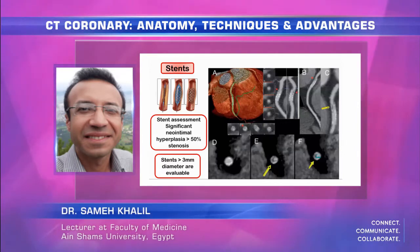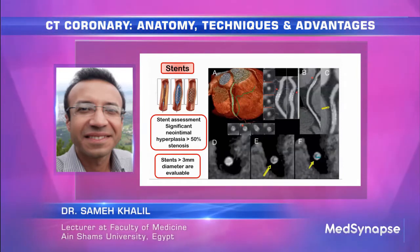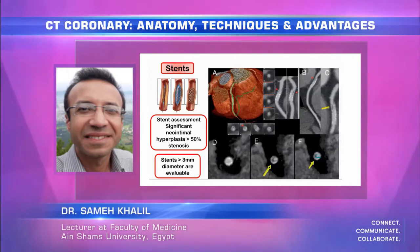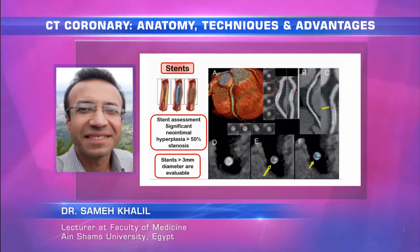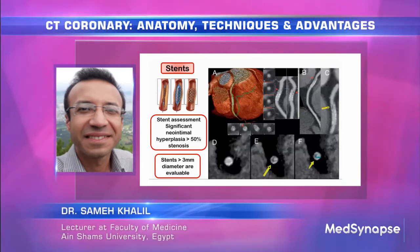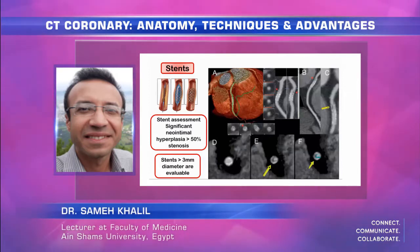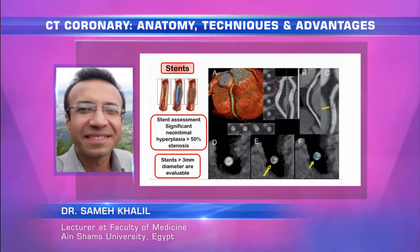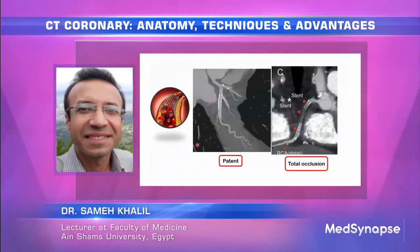Stents with a lumen diameter above 3 mm can be assessed by CT coronary, while stents below 3 mm diameter cannot be adequately evaluated. The new era features bioabsorbable stents, which scaffold the coronary artery lumen and dilate the stenosis site via angioplasty while avoiding the foreign body reaction of metal stents, as they are absorbed over time.